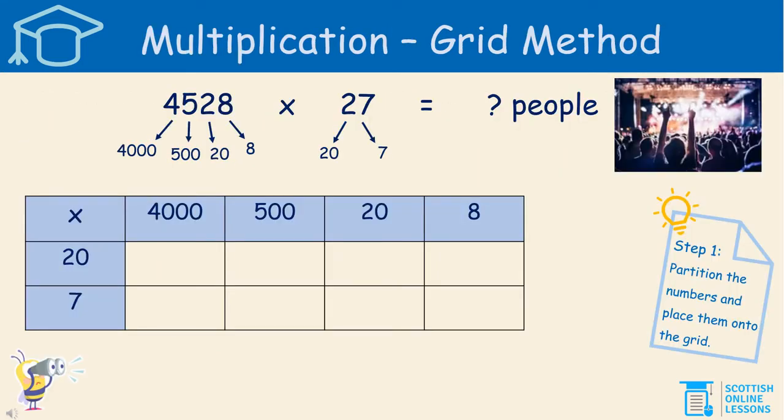We're going to have a look at the grid method. This is a really good strategy for finding multiplication answers when we're dealing with larger numbers like this — simplifying it for ourselves to find the answer and have a good understanding of the numbers as well. Step 1 tells us to partition the numbers and place them onto the grid. You can see that 4,528 has been partitioned, and the number 27 has been partitioned to 20 and 7. They have been put on the grid around the outsides, and the multiplication sign in the top left reminds us that we are multiplying.